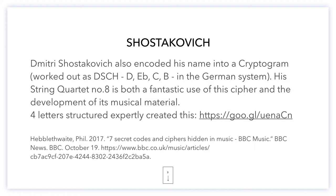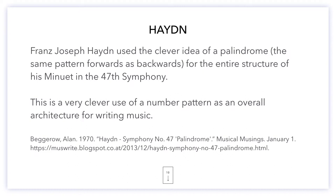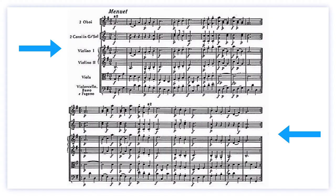Haydn had the clever idea of a palindrome — the same pattern forwards as backwards — for the entire structure of his minuet in the 47th Symphony. This is a very clever use of a number pattern as an overall architecture for writing music. The top half is forwards, and then the second system, the bottom half, is the same as the top, just backwards.